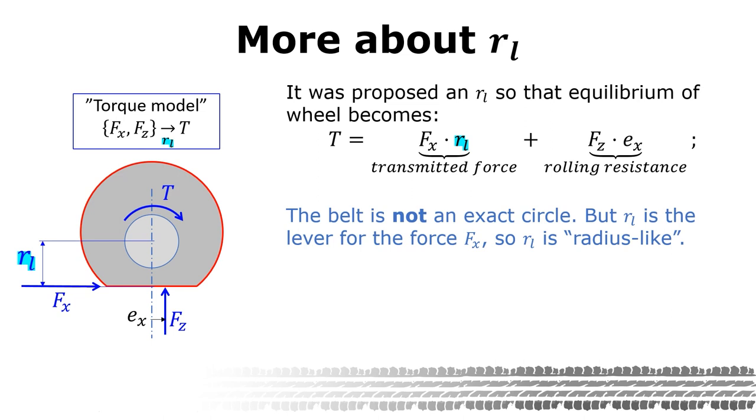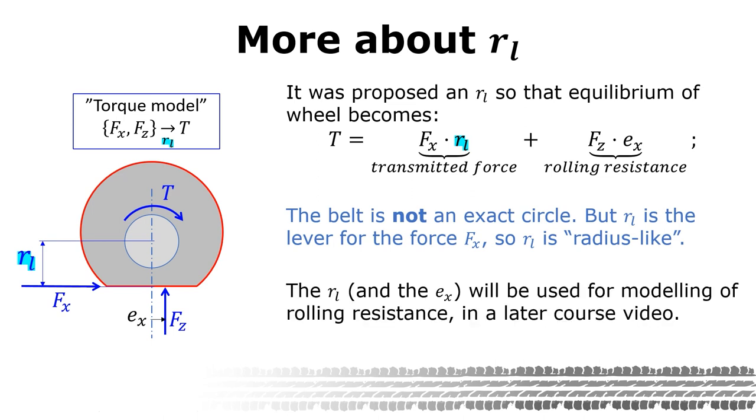Again, it's not the true radius because the belt is not forming a perfect circle. But the rl is still the radius-like length, which is why we call it loaded radius. The loaded radius is important for the coming rolling-resistant parts in this course.